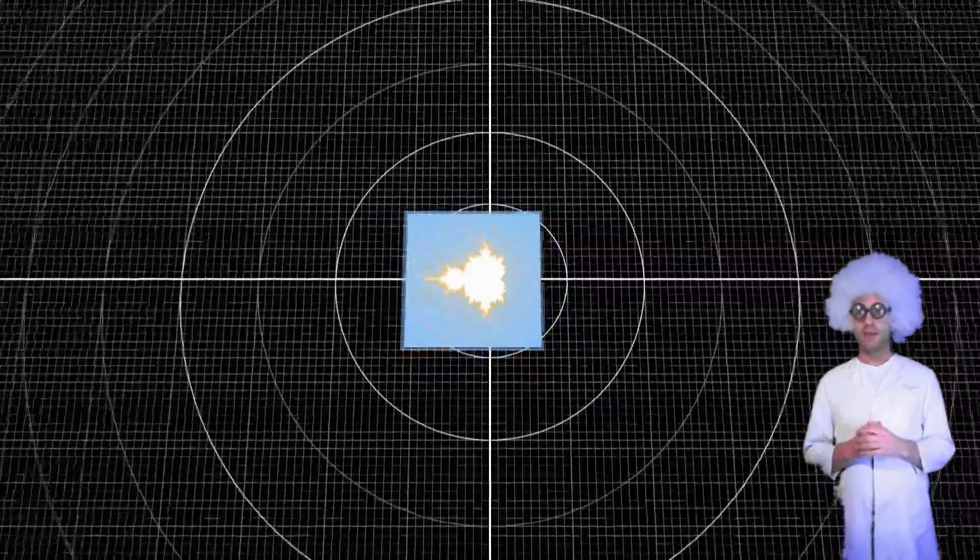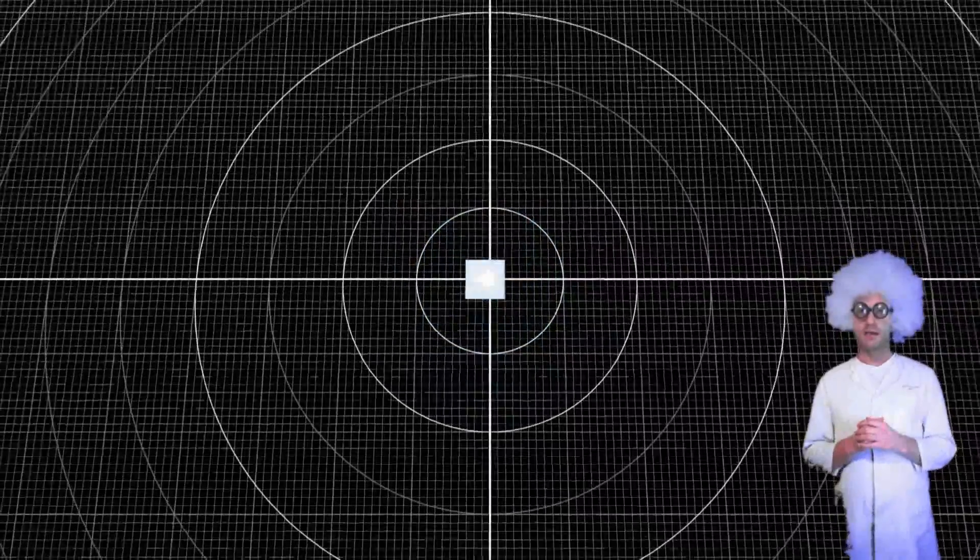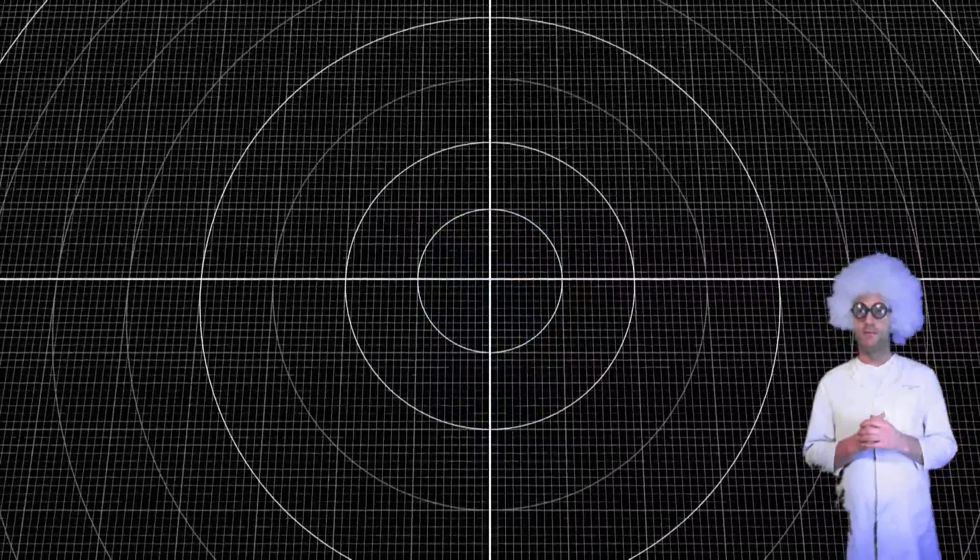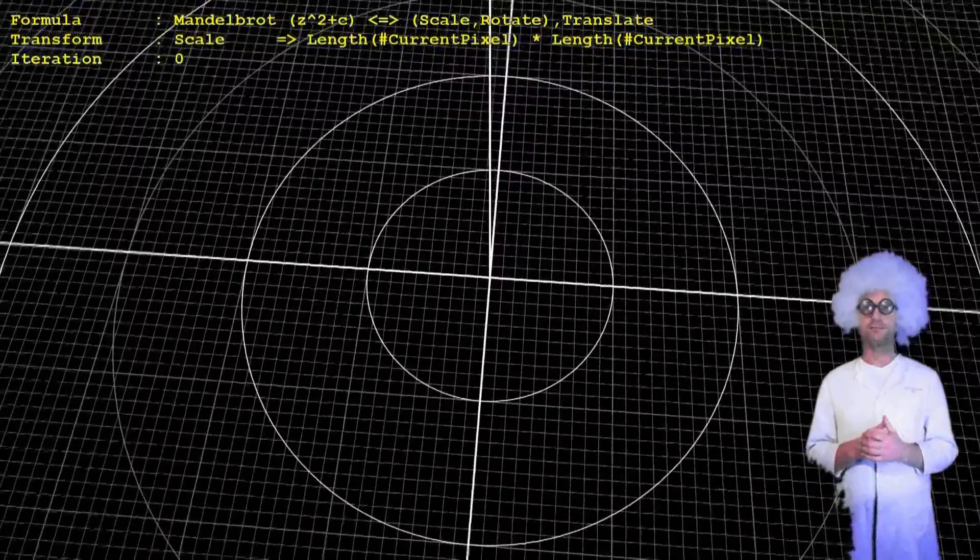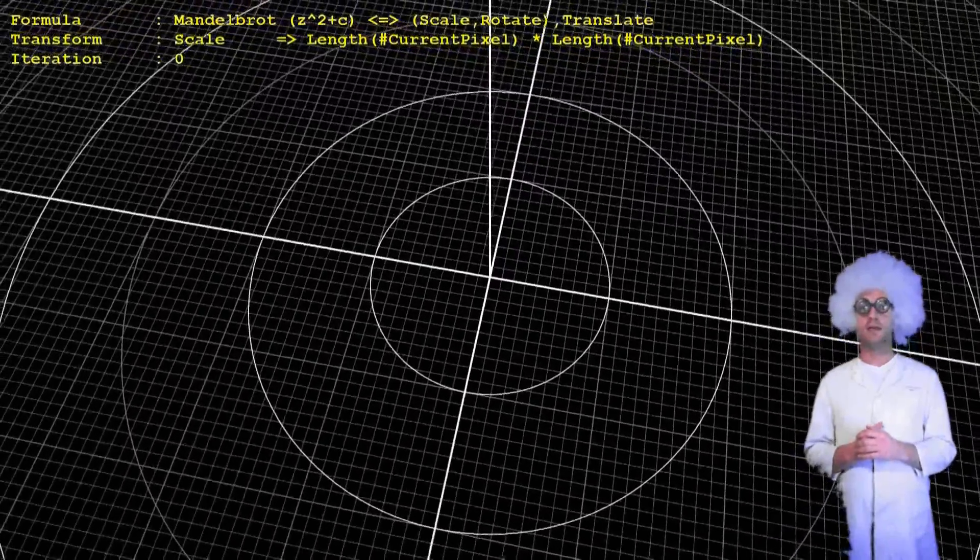While the image is shrinking, we see the grid with some marked circles. The inner one is a unit circle.